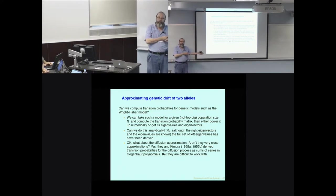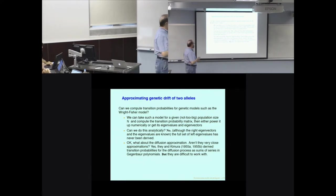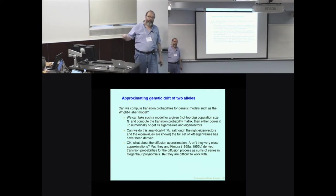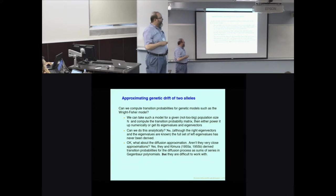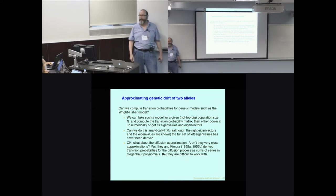You can compute it numerically and figure out the distribution of gene frequencies after, say, a thousand generations. It might be nicer if we had a formula that said, given a current gene frequency of 0.3, here is the distribution after a thousand generations. Unfortunately we can't do that — we've got the eigenvalues of that matrix, and one set of eigenvectors, the right eigenvectors, but the left eigenvectors, the inverse of that, has never been computed analytically.